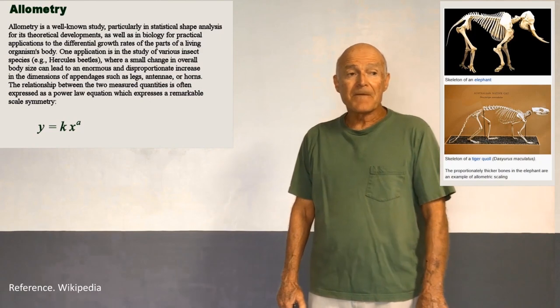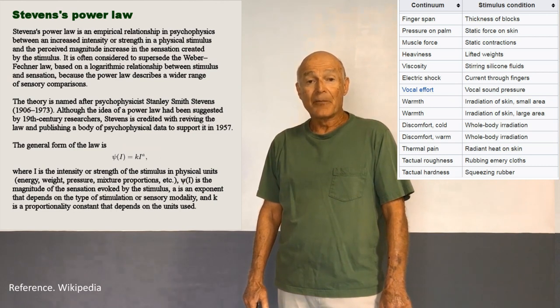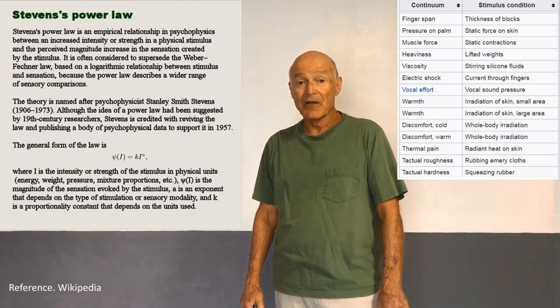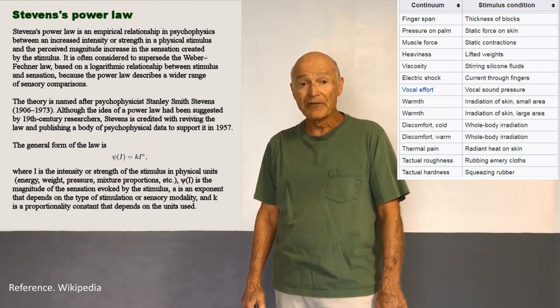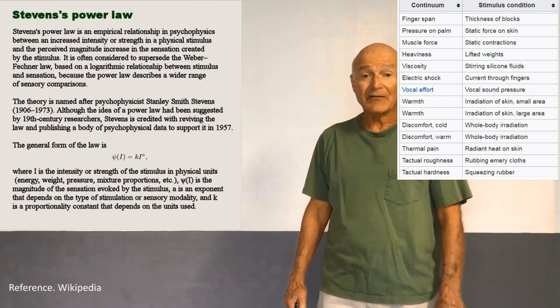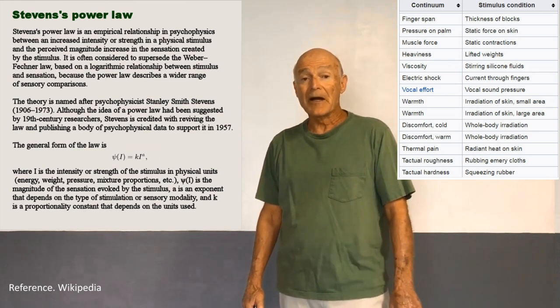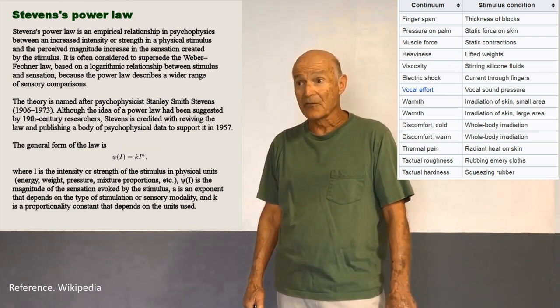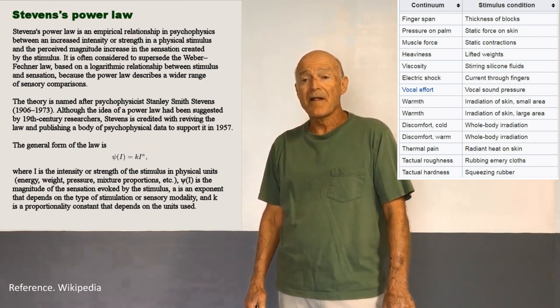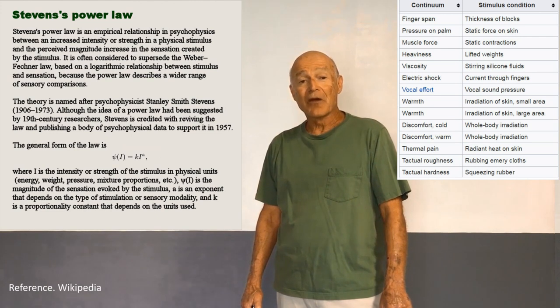It turns out that the bi-geometric derivative of a power function is constant. That's just like in classical calculus - the classical derivative of a linear function is constant. And not only is it constant, that constant is the classical slope of that linear function. In the bi-geometric calculus, the bi-geometric derivative of a power function is also constant. And that constant is the bi-geometric slope of the power function.